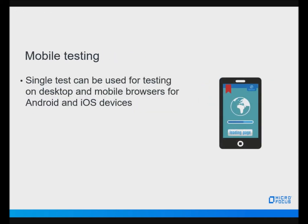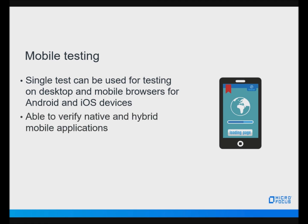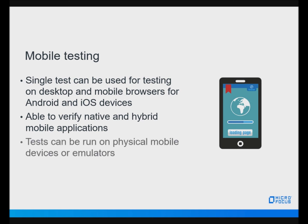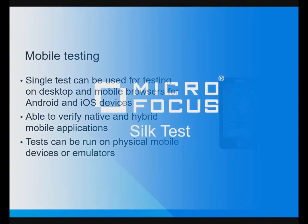In addition to testing on desktop browsers, Silk Test can be used to test on mobile browsers for Android and iOS devices, including Chrome and Safari. A single test can be used for both desktop and mobile browsers — no need for separate tests. Tests can also be recorded for verifying native and hybrid mobile applications. These tests can be run on real, physical mobile devices or through emulators.